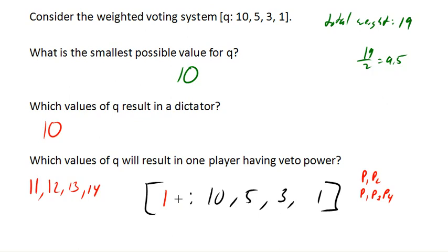How about 15? Well, at this point, player 1, player 3, player 4 is no longer a winning coalition. The only way to win at this point is to have player 2 on board. There are lots of ways we could win - there are four different arrangements that all reach quota, but all of them involve both player 1 and player 2. So at this point we have two players with veto power, and so these are the only values that result in exactly one player having veto power but not being a dictator.